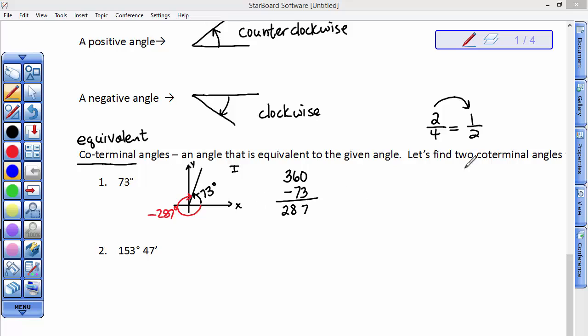Likewise, if I wanted, I'm asking you for two coterminal angles. I'd like a negative one and a positive one. I can get another equivalent to 73 degrees by wrapping around the circle again. Another 360 degrees. So, I can take 360 and add 73 and get 433 degrees. So, 73 degrees is equivalent to a negative 287 degrees is equivalent to 433 degrees. And these are all ways to name a 73 degree angle.